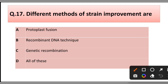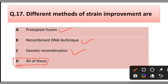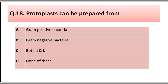Question number sixteen: The different methods of strain improvement are: A) protoplast fusion, B) recombinant DNA technique, C) genetic recombination, D) all of these. The correct answer is option D, all of these — protoplast fusion, recombinant DNA technology, and genetic recombination are all methods for strain improvement.